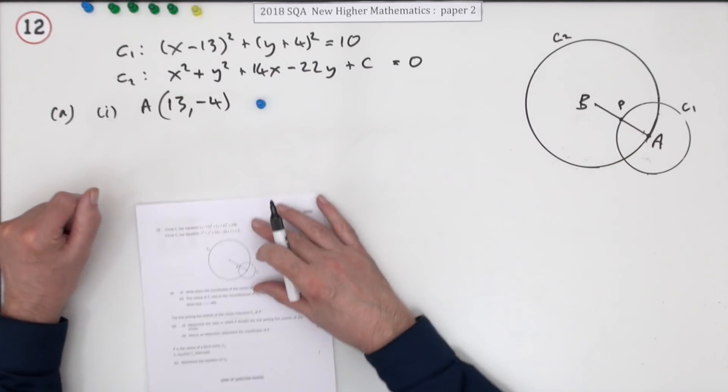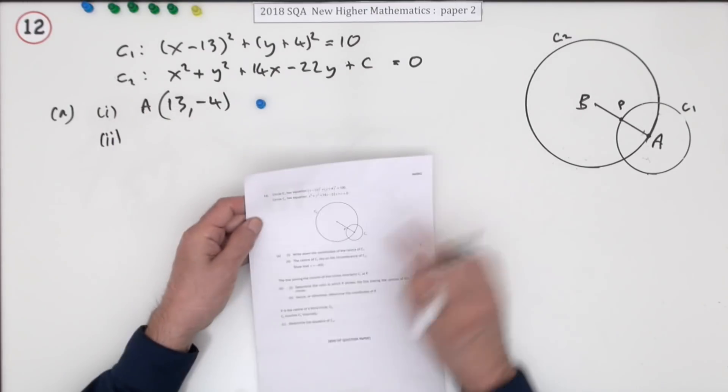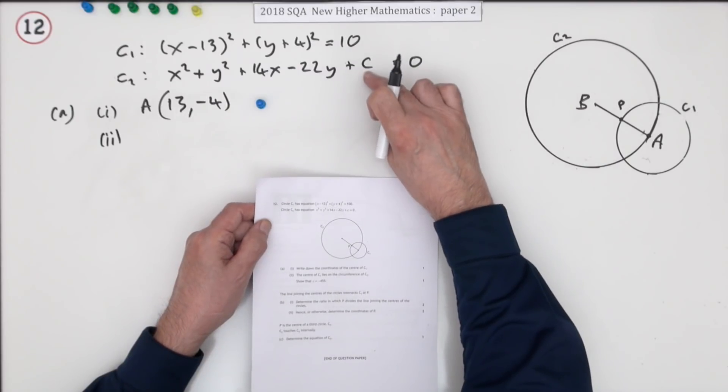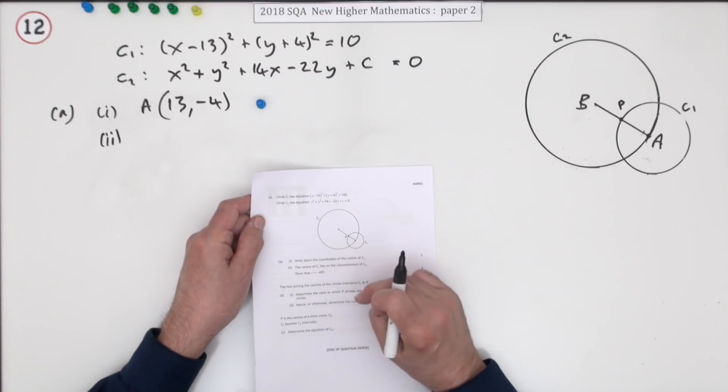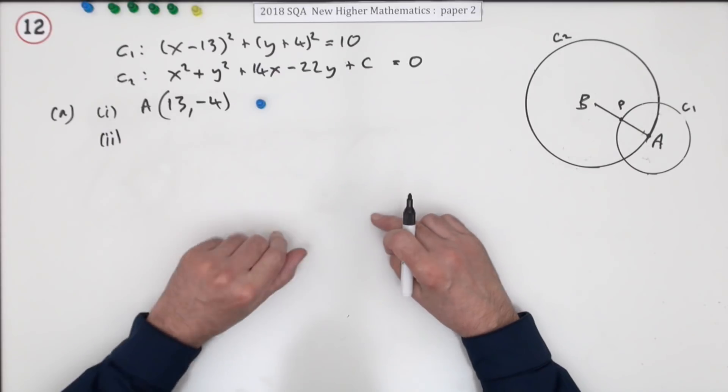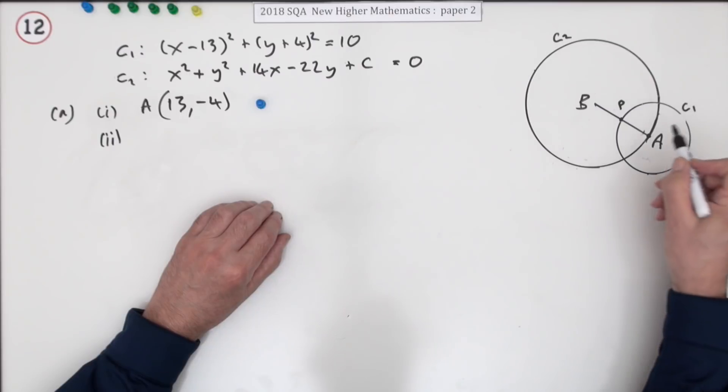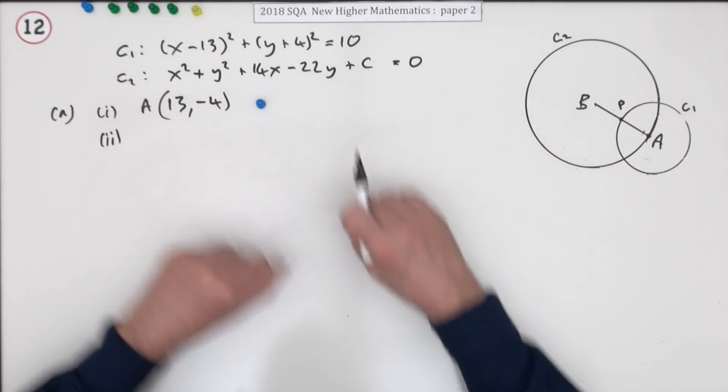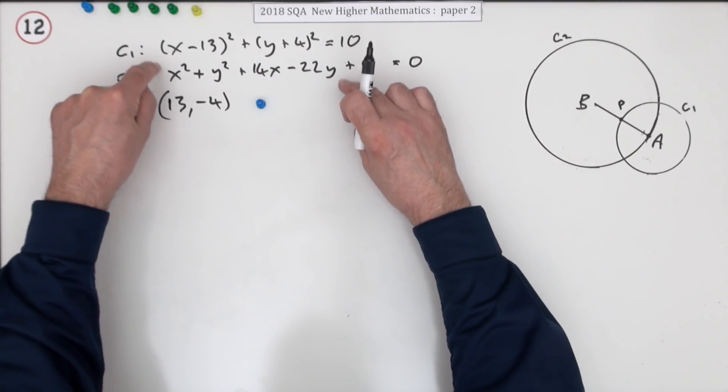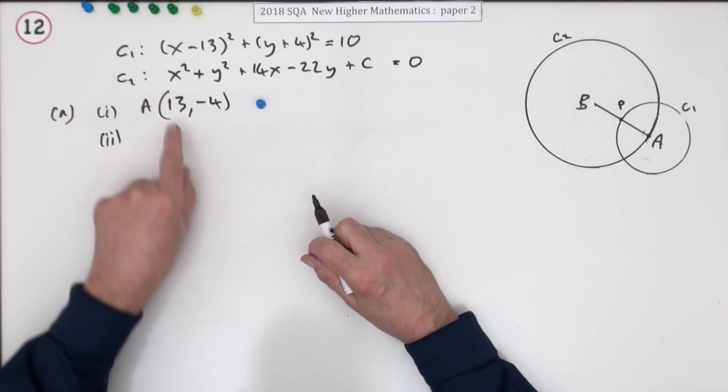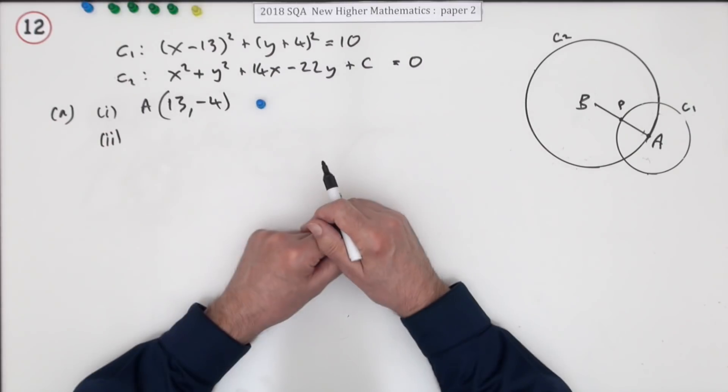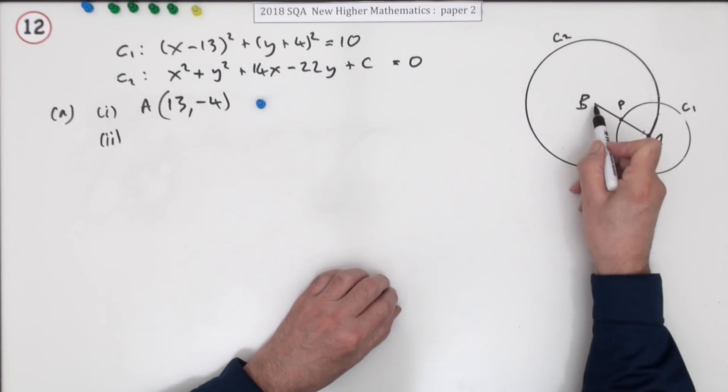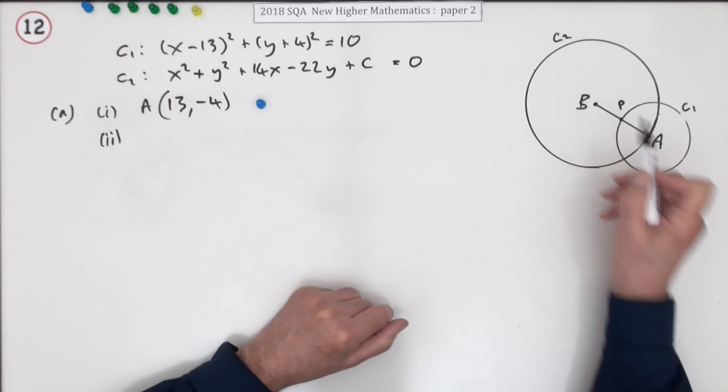Second part: the center of C1, that point I've called A, lies on the circumference of C2. If that's the case, show that C equals negative 455. It's only one mark. What you should think of is this: if A lies on that circle, then the coordinates of A must satisfy its equation. That's the rule for belonging. If your coordinates don't fit, you don't get in.